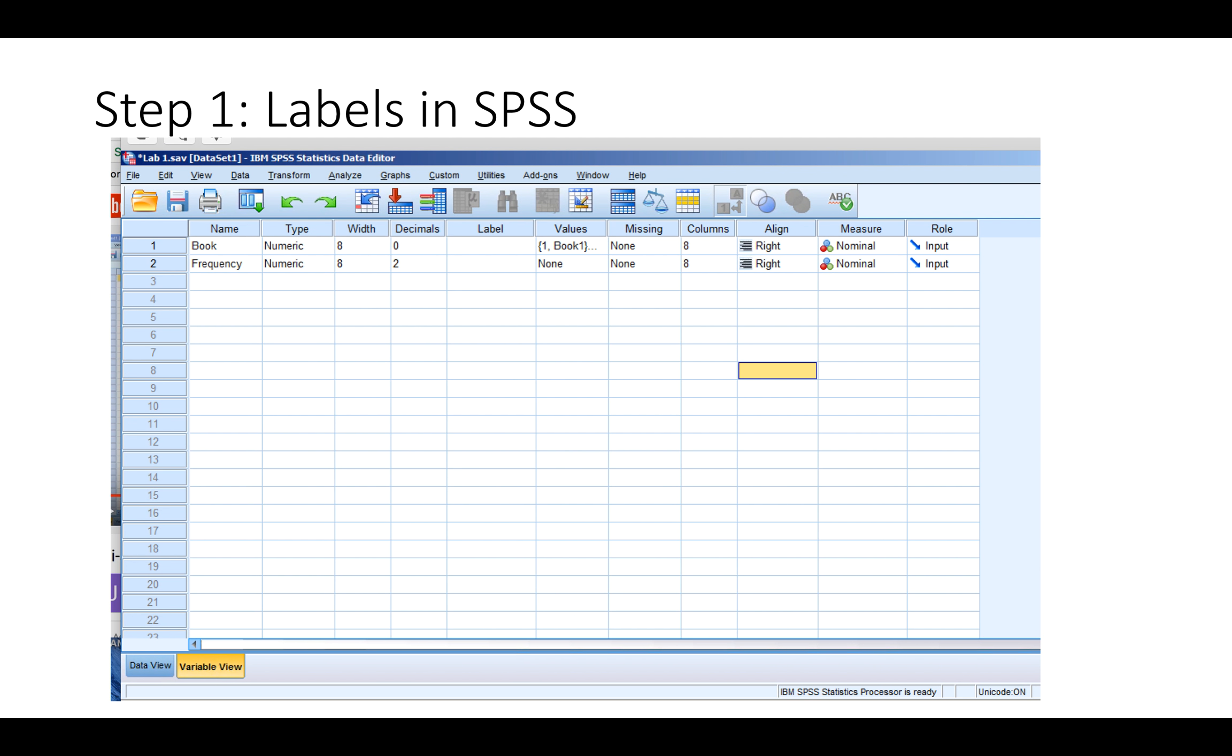The first step that's very important in SPSS is to properly label your data. Go to the variables view on the bottom tab and add book in name and then additionally add frequency in name and make sure the columns over to the right where it says measure say nominal.